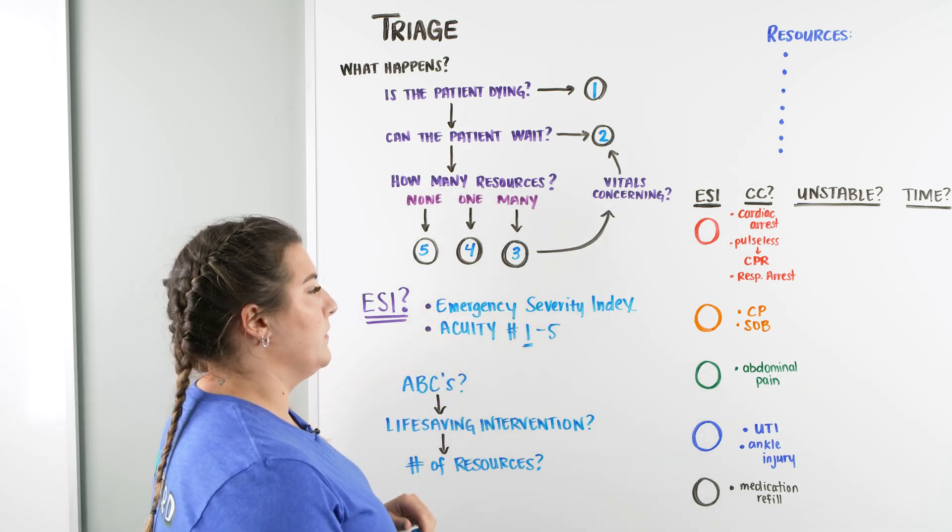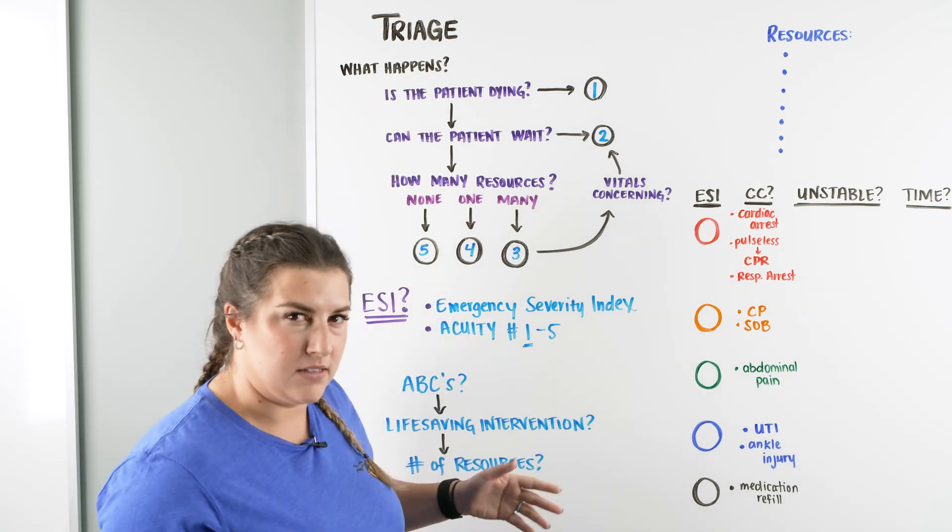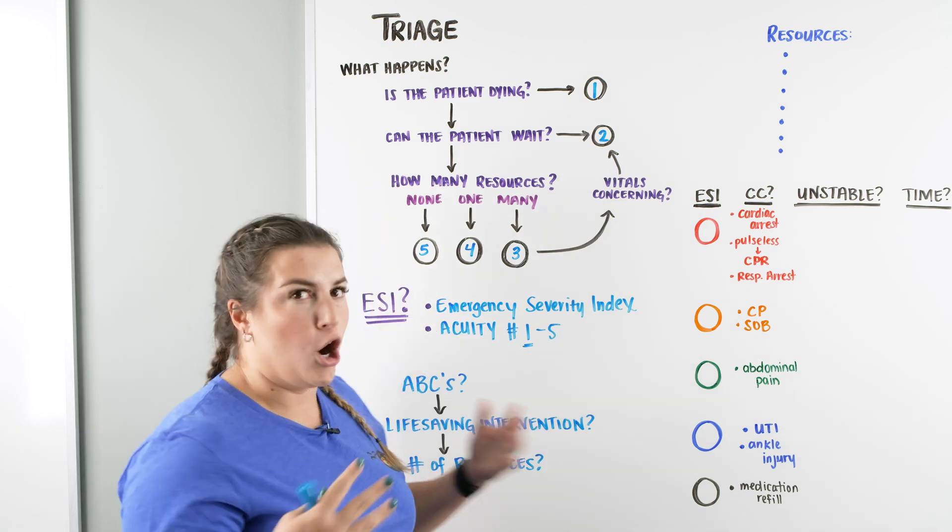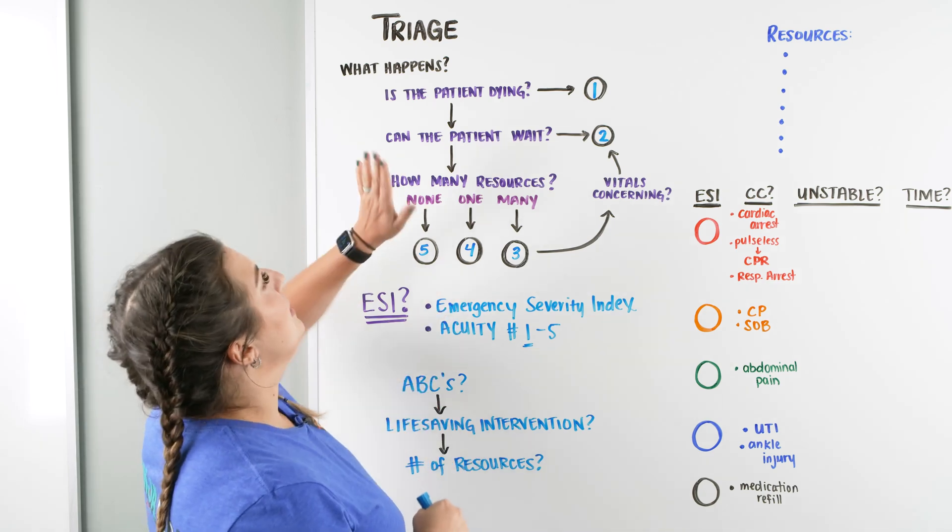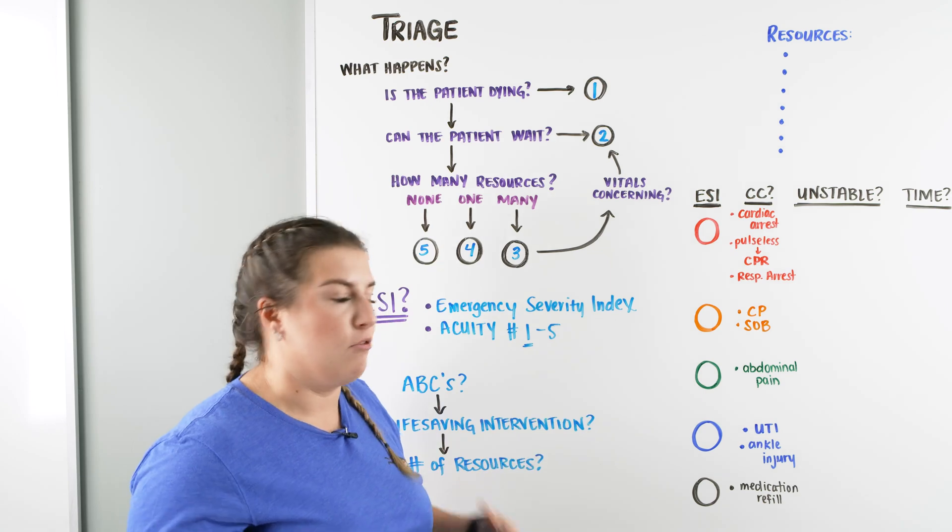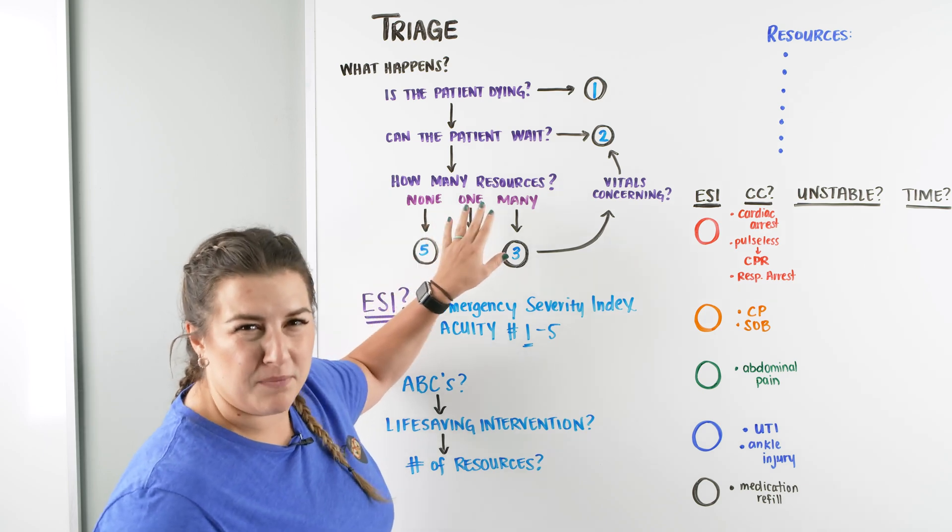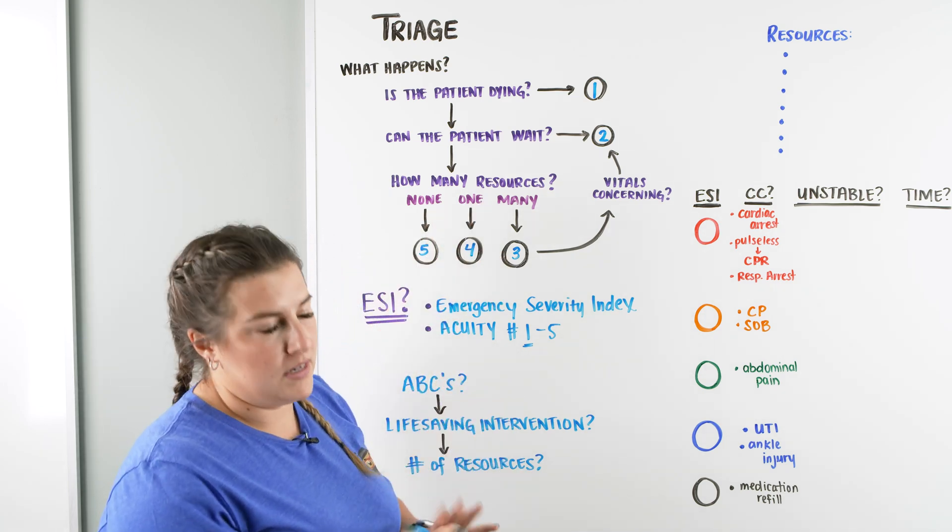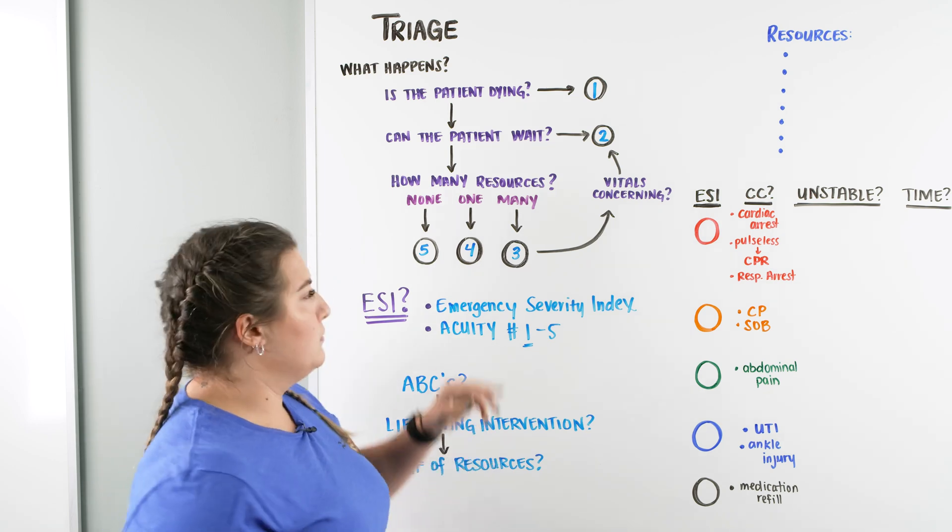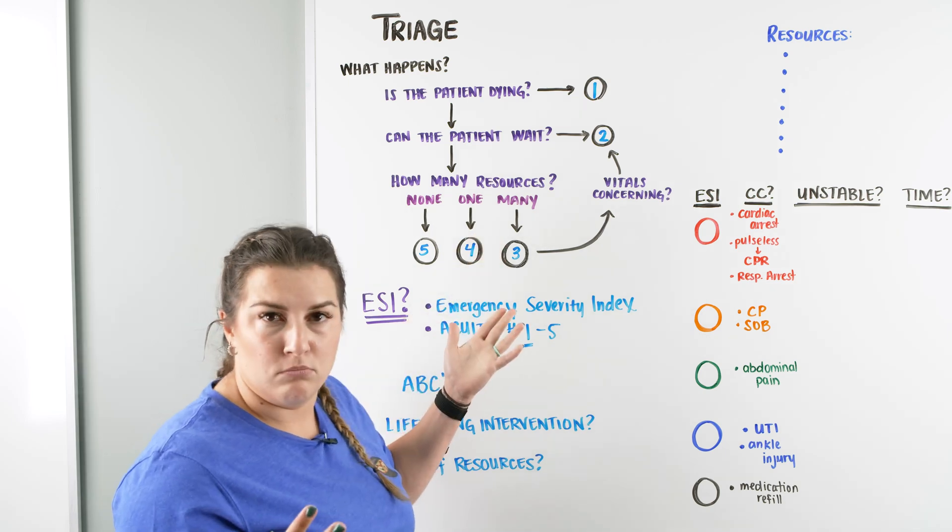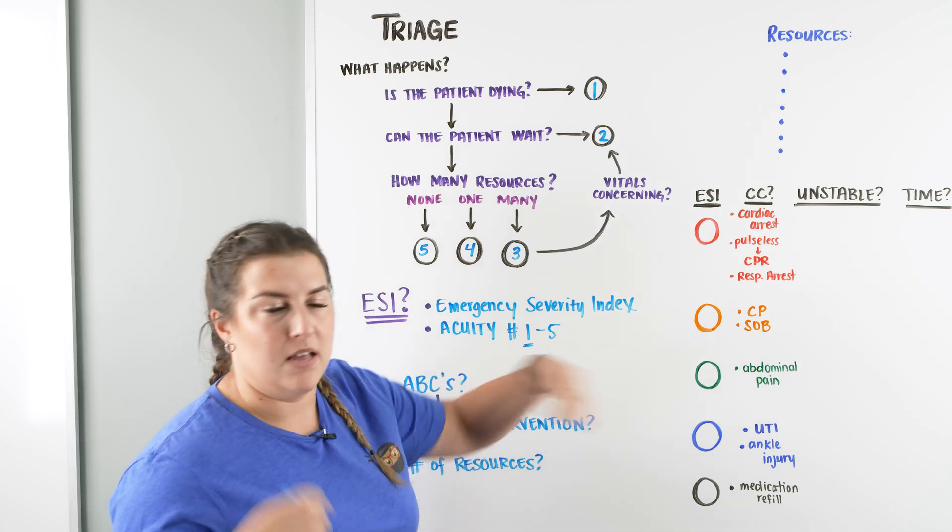So if you understand what the Emergency Severity Index means or that number, then this pathway right here makes a lot of sense. Think about it again. Is the patient dying? Are we currently doing CPR? Are we currently trying to save their airway and put a tube down there in their throat? Then this patient more than likely needs everything we've got right now. But is there somebody who's coming in who has maybe some type of abdominal pain and we're going to think they may need images, they might need some antibiotics, so they're going to need medication, they might need some fluids from us, then we're going to be using maybe more than two resources. So we're going to give them an acuity of three.